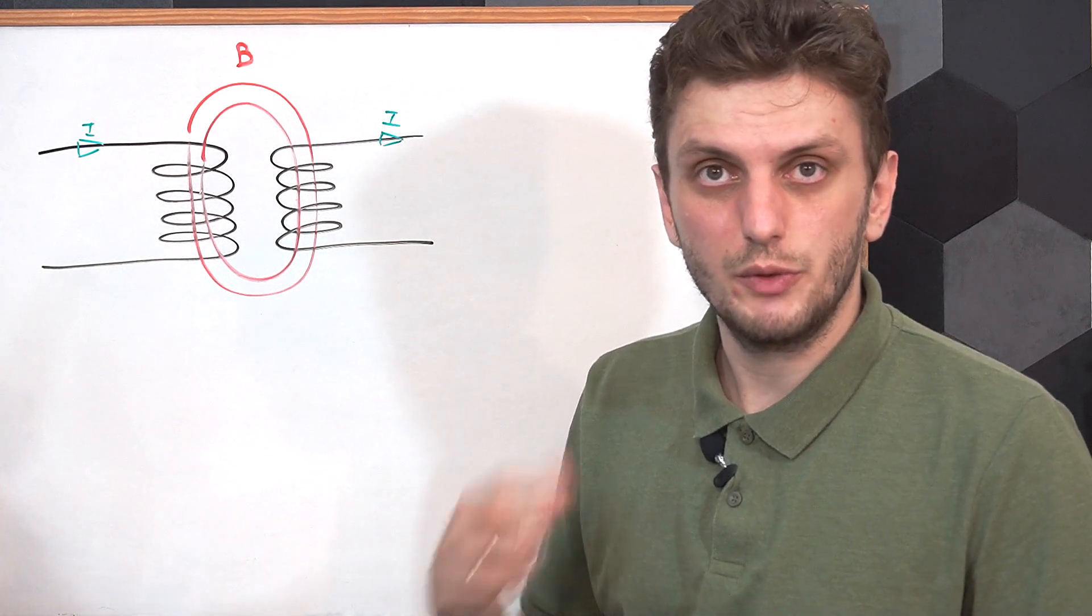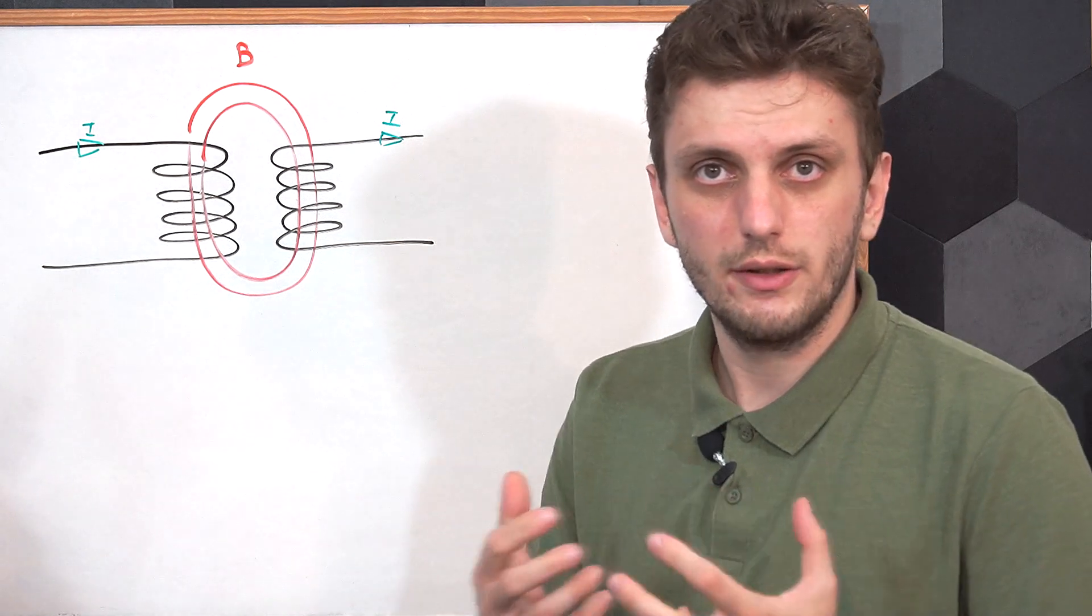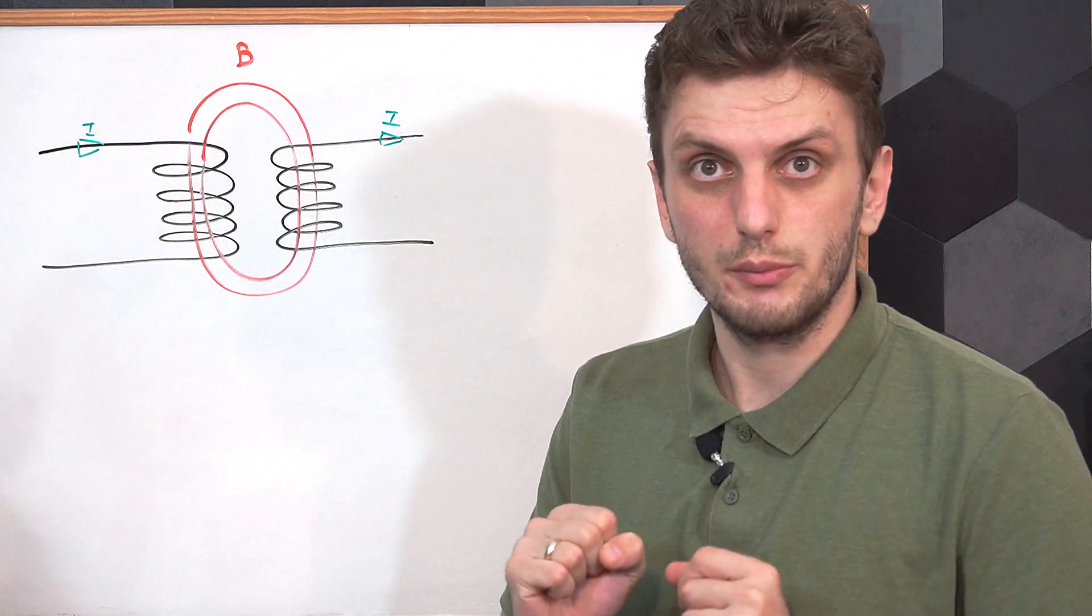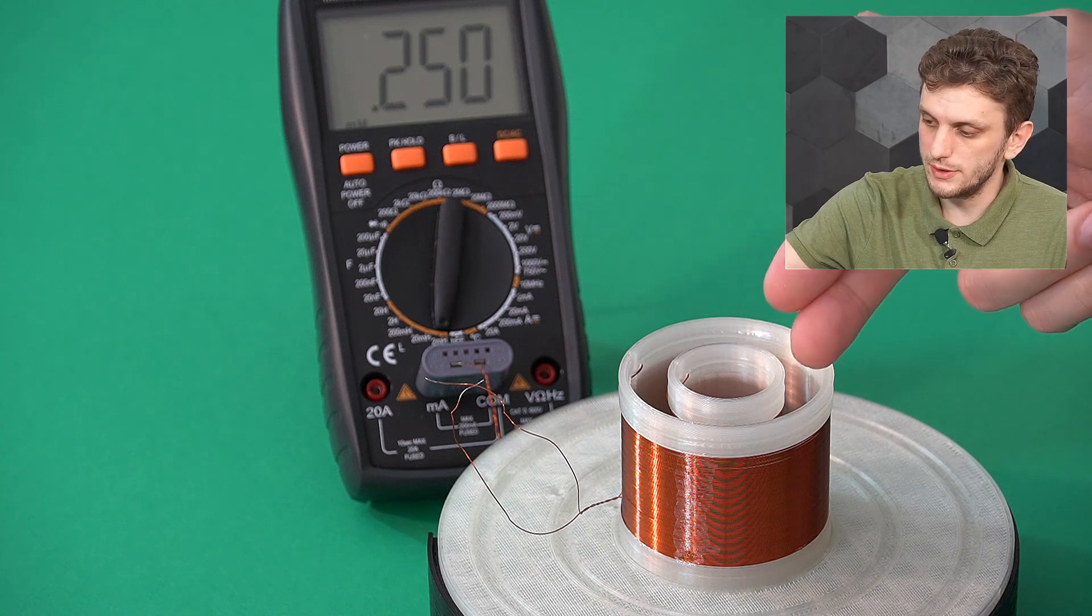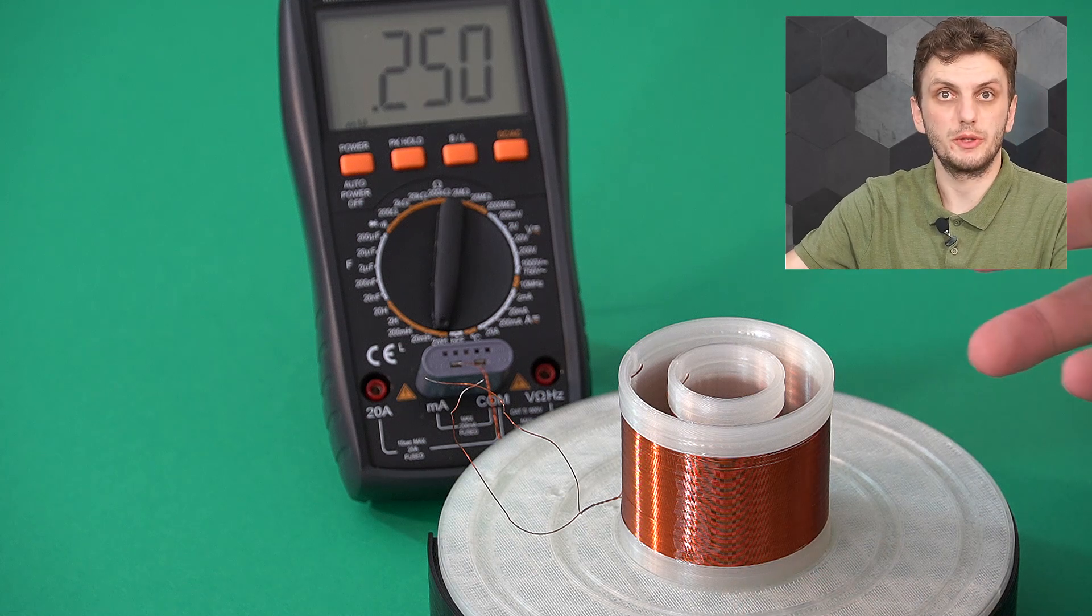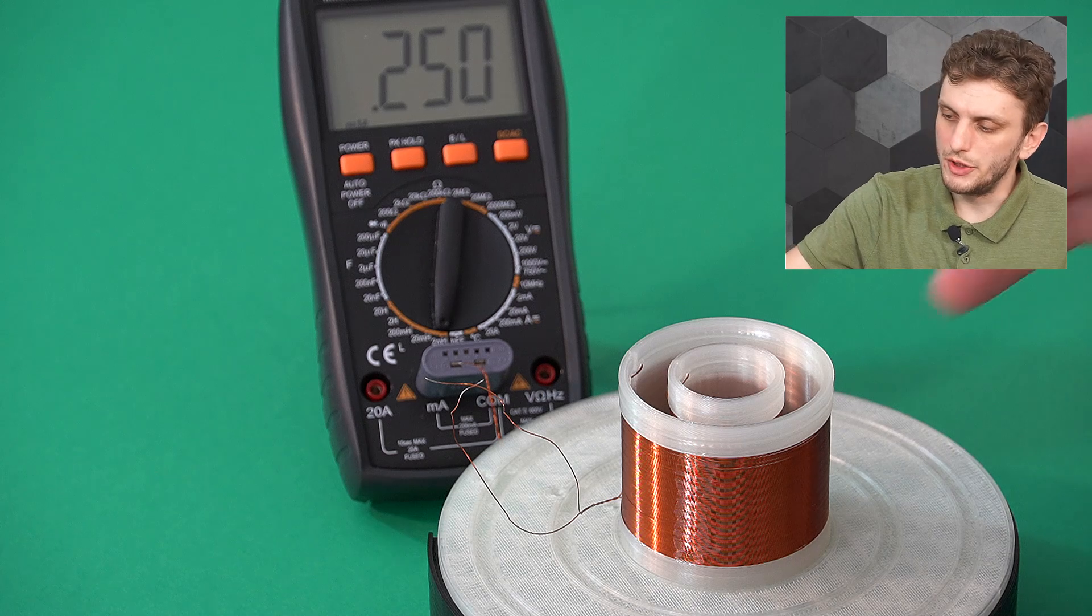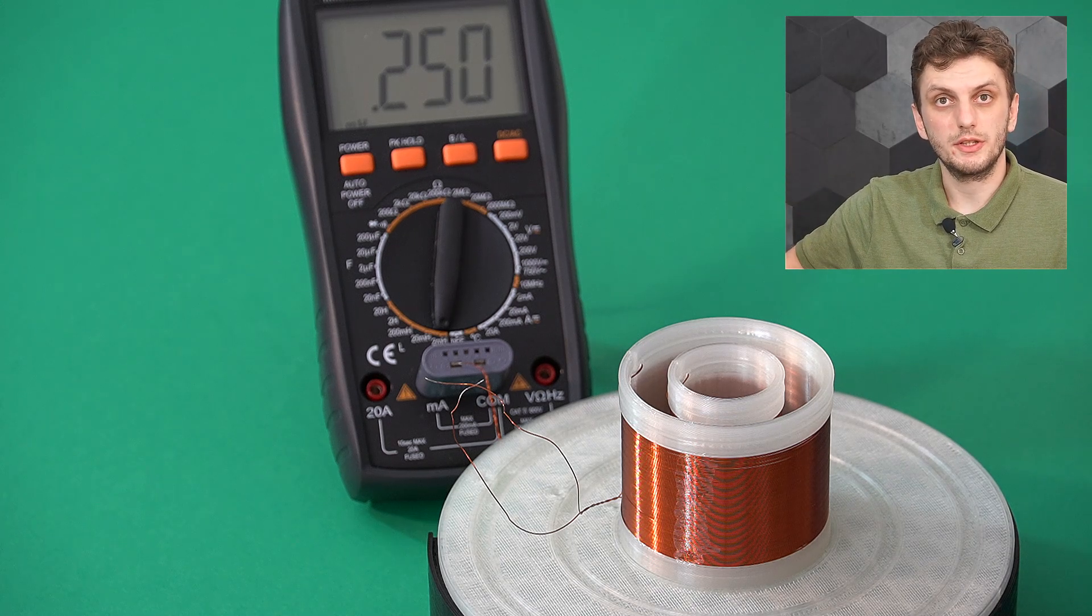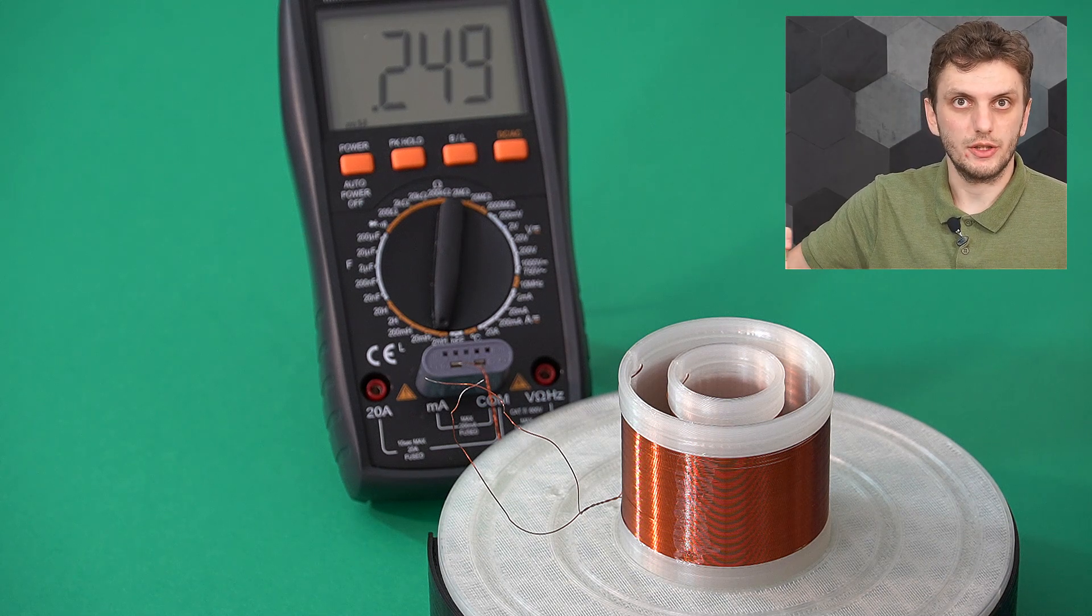And this will be the main effect in which we are interested in today. And to start to understand why some of the magnetic flux will be leaking out, let's start with an experiment. So what I got here are two concentric coils, both having 150 turns, which form a transformer.